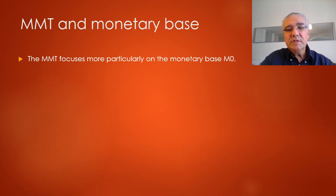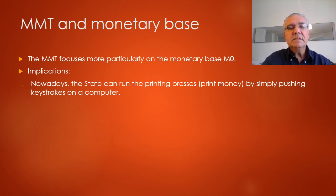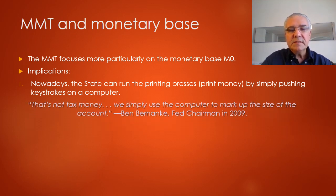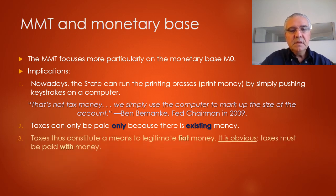MMT also focuses particularly on the monetary base, and its implications are really interesting, fairly logical, and almost obvious — but interesting nonetheless. Nowadays, the state can run the printing press and prints money by simply pushing keystrokes on a computer. Ben Bernanke in 2009 said, 'That's not tax money — we simply use the computer to mark up the size of the account.' In the view of MMT economists, taxes can only be paid because there is existing money. Thus, taxes constitute a means to legitimate fiat money, because taxes must be paid with money.